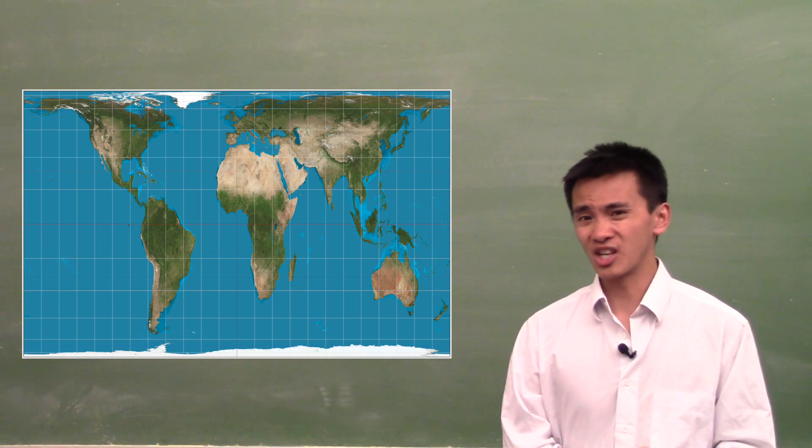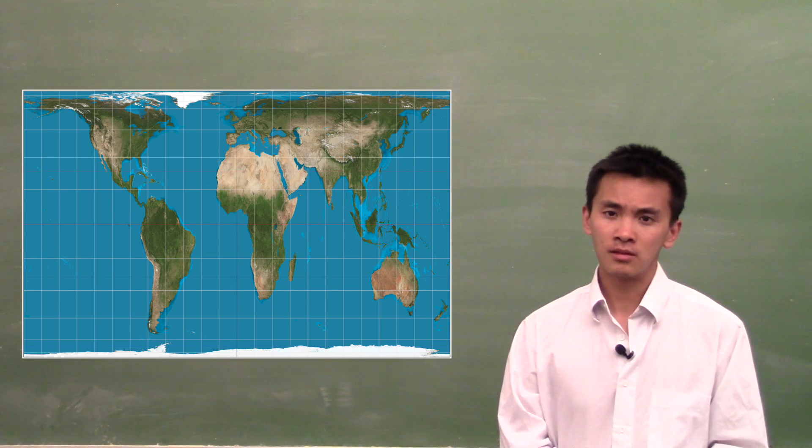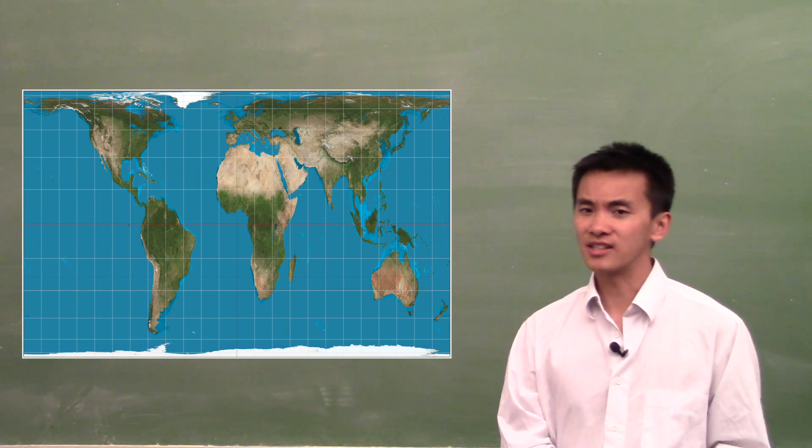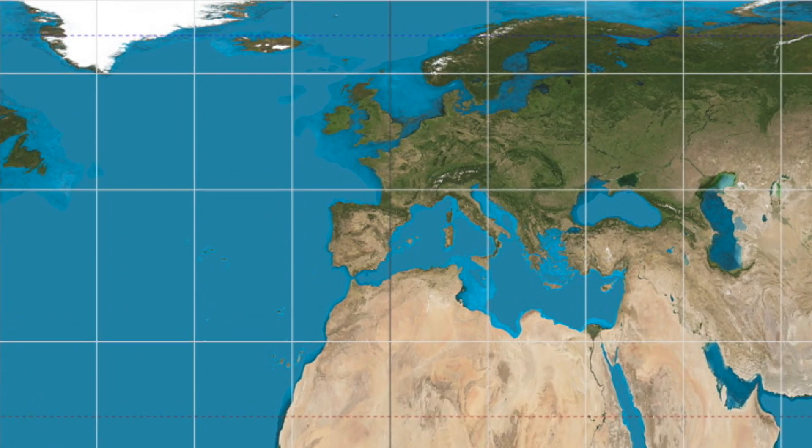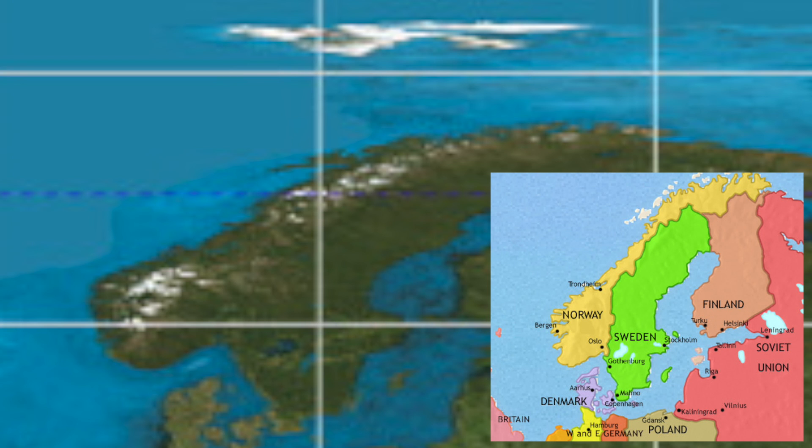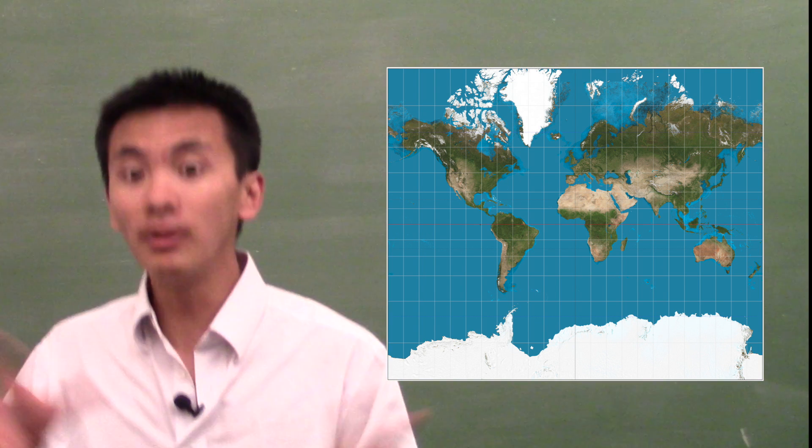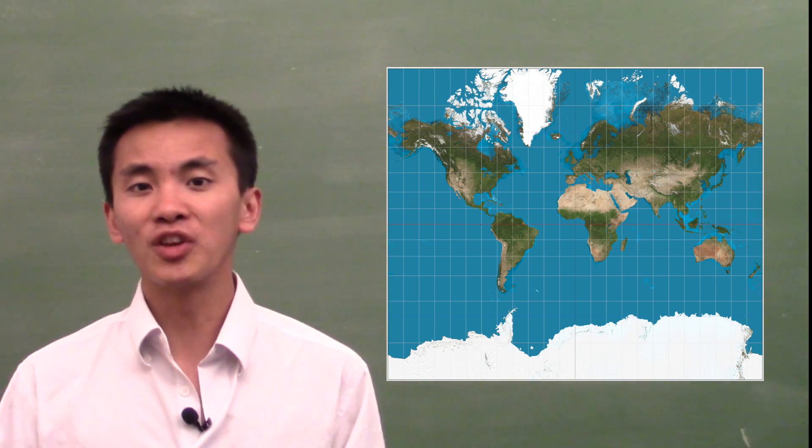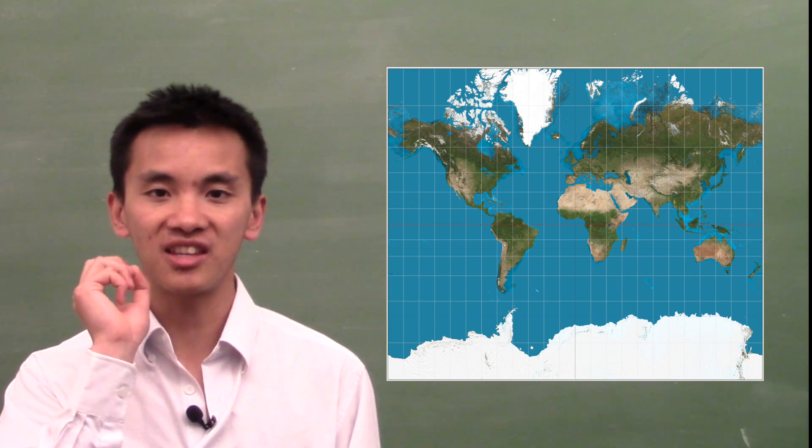Unfortunately, the Gall-Peters projection is still wrong. When you look at a country like Norway on this map and you zoom in on this country, the shape of this country is not its real shape. It is somehow vertically squeezed. Conversely, the amazing thing about the Mercator projection is that the shapes of the countries are always the right shapes.